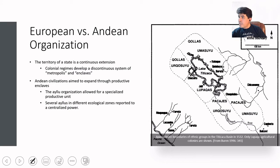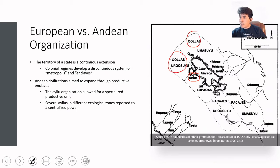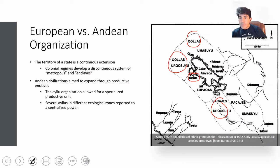Here you can see how the Lupaca people — with Chukuito as the capital — were one of the ethnic groups of the Aymara people living around the Titicaca Lake, along with the Coleas, Orcosulio, and Pacajes. In this graphic you can see how, even though they were at more than 12,000 feet around the Titicaca Lake, they were controlling different areas at different elevations next to certain rivers. That is vertical control of an archipelago of productive areas.